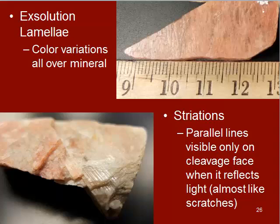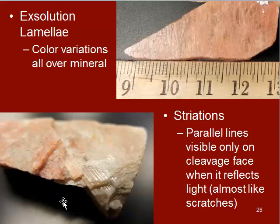The next thing helps distinguish between types of feldspar. Potassium feldspar is the top one, and plagioclase feldspar is the bottom one. Plagioclase feldspar has what are called striations — parallel lines that you can only see when reflecting light off of a cleavage face; they look like parallel scratches but are actually the internal arrangement of atoms expressed outward. Exsolution lamellae, on the other hand, are color variations visible on any side of the mineral without needing to reflect light. These two features are the main way to tell the difference between the two feldspars.